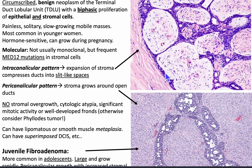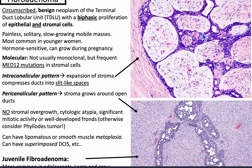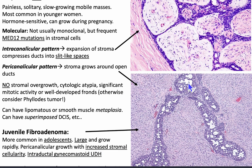There are broadly two types of fibroadenomas: intracanalicular, where the ducts are slit-like spaces, and pericanalicular, where the duct spaces are open. To remember: intra is slit-like, peri is open.